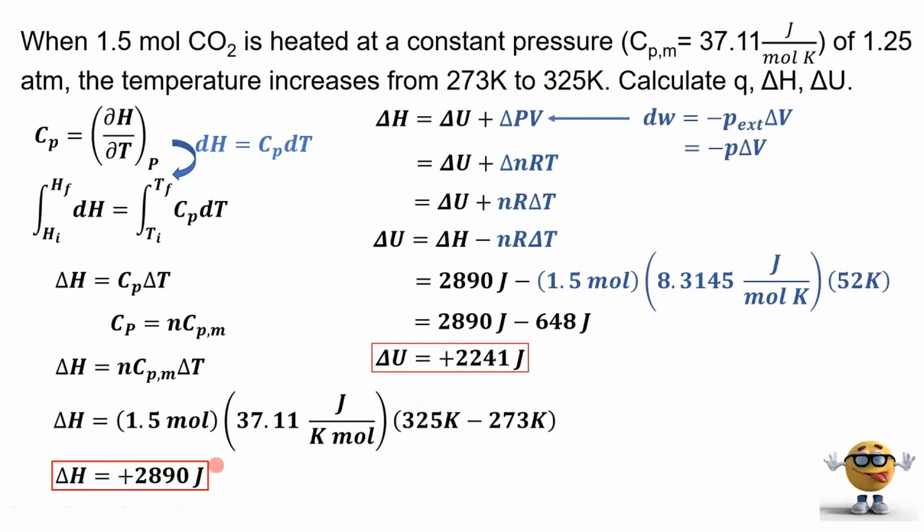So now that we got the change in the enthalpy and the change in the internal energy, we can get the work. And the work, readily, is this term right here. It's this term because this is our work. Work equals negative P delta V. Well, P is constant, so if we yank this out, we get P delta V, which is like our work, but this is the negative of the work. This is the negative. So it'd be the negative of this. We have a negative here when we moved it to the other side, so our work is negative 648 joules.